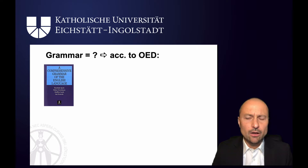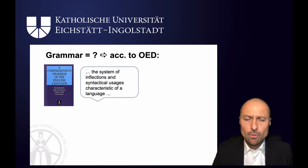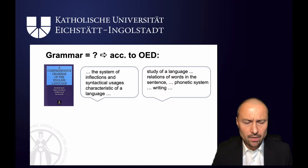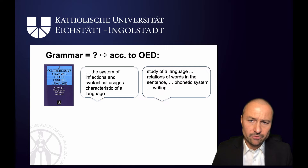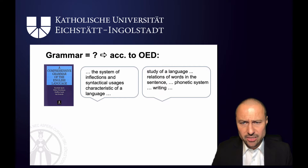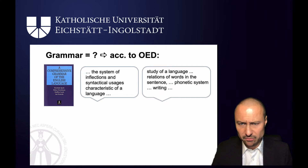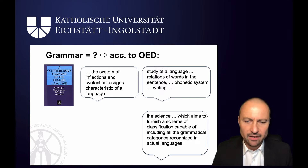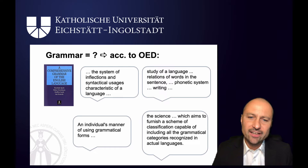What does the term grammar mean? According to the OED, it can either be a book, like the Comprehensive Grammar of the English Language, or it can be the abstract system of inflections and syntactical usages characteristic of a language — so that would treat grammar basically as syntax. But some definitions cover more than that. For these people, grammar is actually the study of language, and that includes the relations of words and the sentence, phonetic systems, writing systems, and so on. A third definition is the science which aims to furnish a scheme of classification capable of including all the grammatical categories recognised in actual languages. And finally, an individual's manner of using grammatical forms.